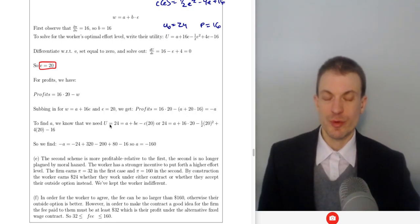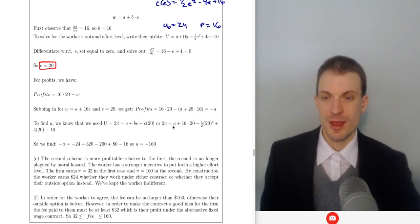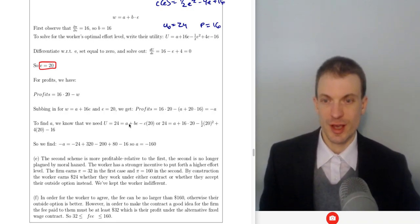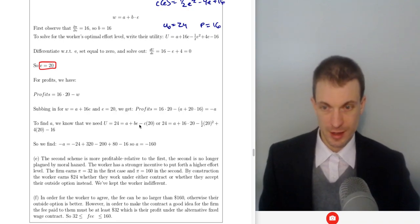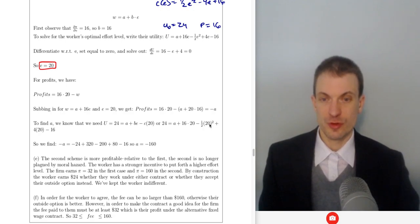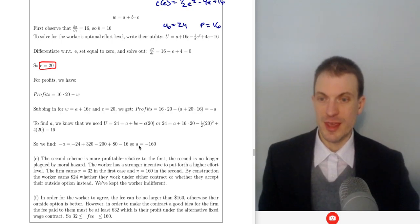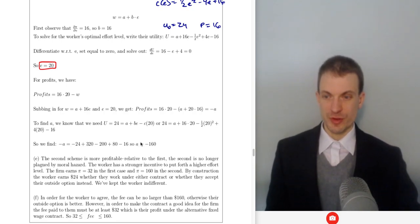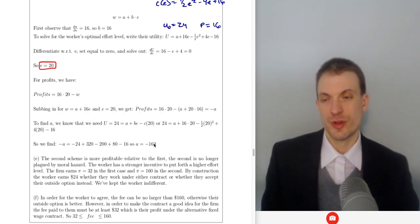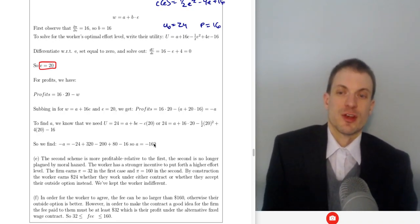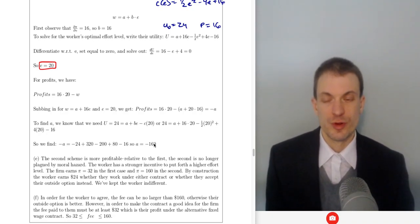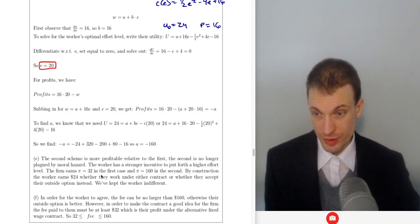To find what A is, we set the worker's utility equal to 24 — their outside option — and find the fixed portion of the contract. Plugging in effort of 20 throughout: A plus 16 times 20, minus one-half times 20 squared, plus 4 times 20, minus 16 equals 24. We find the fixed component has to be negative 160, meaning the worker is paying the firm 160, which represents $160 worth of value they're generating.